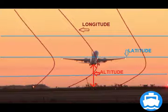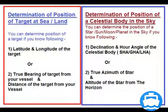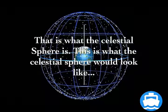Basically, positions on Earth's surface are two-dimensional and positions in space are three-dimensional. To study astronomy further, we must know about the celestial sphere.